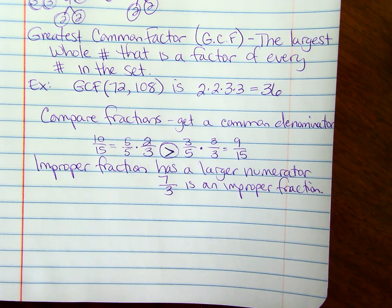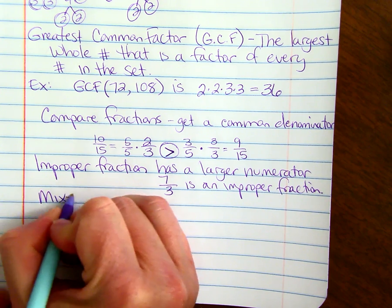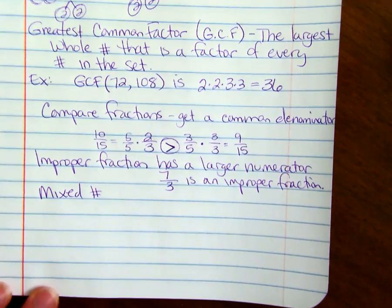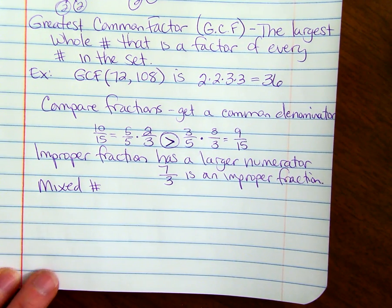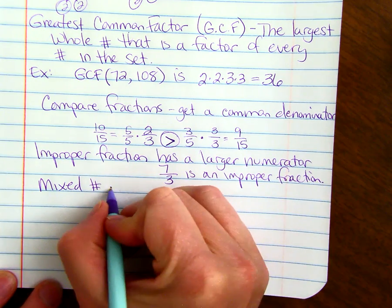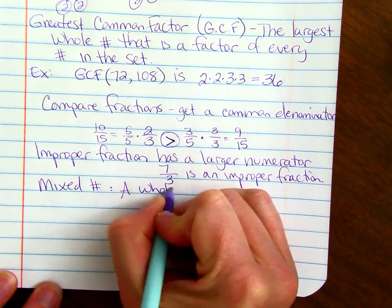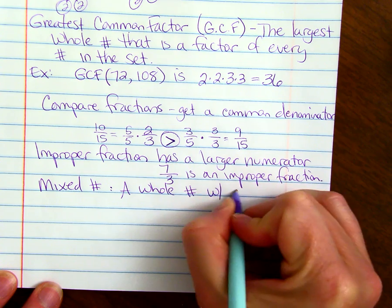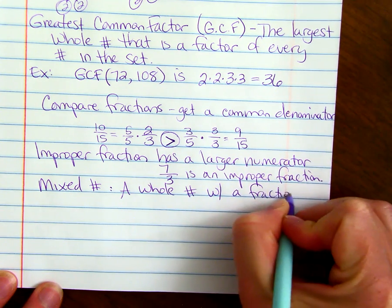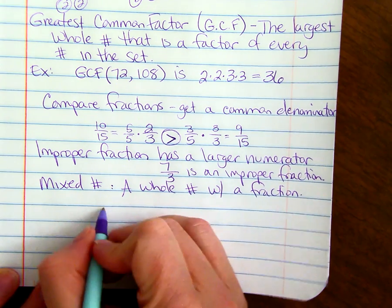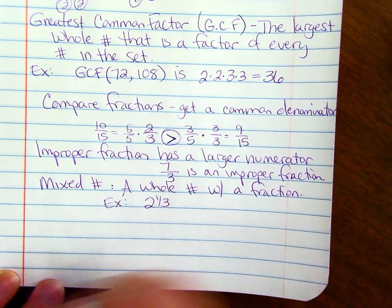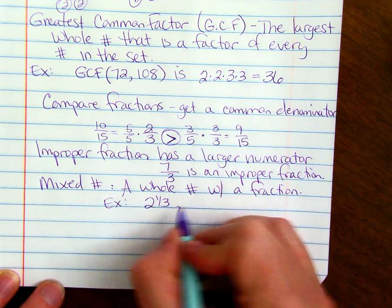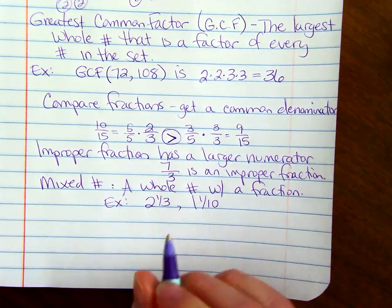And the last definition we're going to put in is a mixed number. It's a whole number and a fraction with it. For example, 2 and 1 third would be considered a mixed number. 1 and 1 tenth.